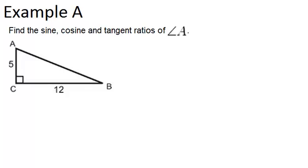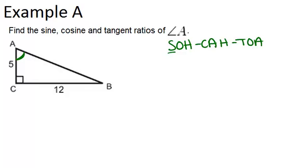In this video, we will look at a few examples to practice working with sine, cosine, and tangent. In example A, it says find the sine, cosine, and tangent ratios of angle A. Before we get started, we want to remember our formula, which SOH-CAH-TOA helps us remember: sine is opposite over hypotenuse, cosine is adjacent over hypotenuse, and tangent is opposite over adjacent.